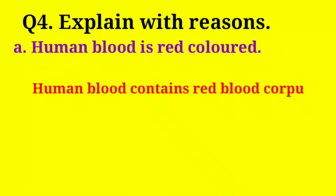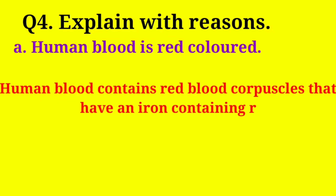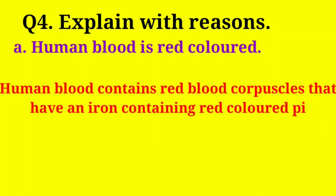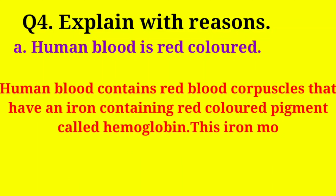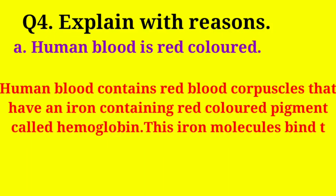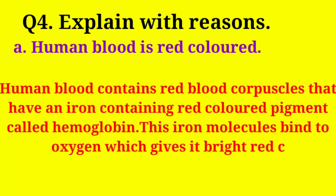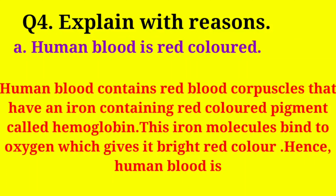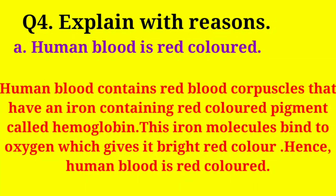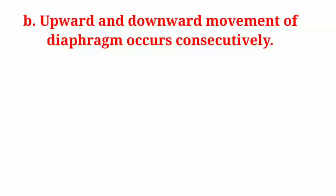Human blood contains red blood corpuscles that have an iron-containing red-colored pigment called hemoglobin. These iron molecules bind to oxygen, which gives blood its bright red color.